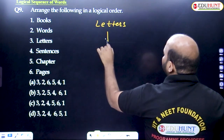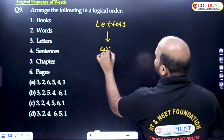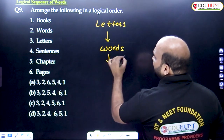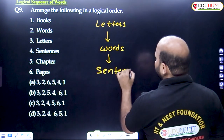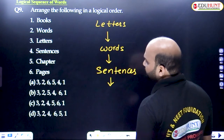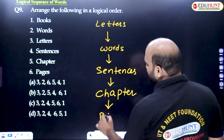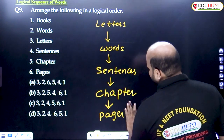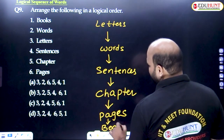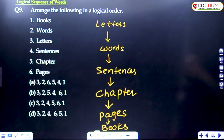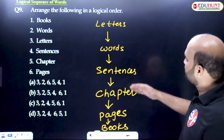Letters come first. A combination of letters is called a word, words are combined into sentences, sentences are combined into chapters, chapters are combined into pages, and pages make up the book. So this is the order.